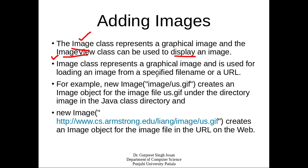The Image class is used for loading an image from a specified file name or a URL. Either you can load the image from a file name, or you can load it from a given URL. If you know the web address of the image, you can pass that address to the constructor of this class and it will automatically load that image into memory. For example, you call the new keyword and then call the constructor of the Image class, passing it the address of your image on your computer system.